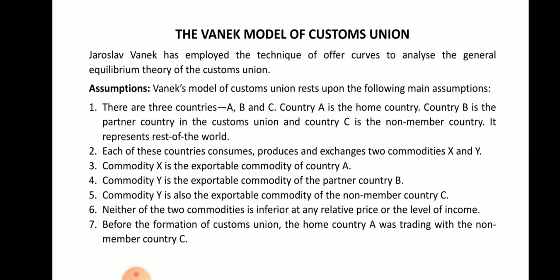The first assumption is that there are three countries: A, B, and C. Country A is the home country, country B is the partner country in the customs union, and country C is the non-member country, representing the rest of the world.